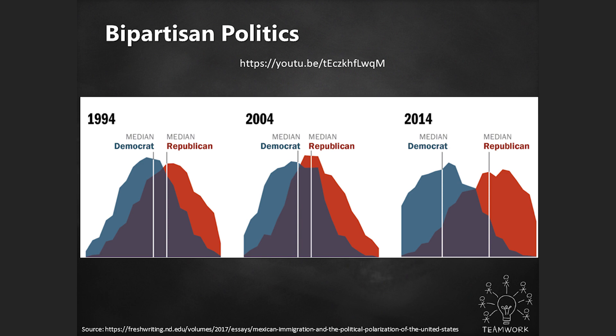In bipartisan politics, there's a lot of social network analysis — who votes with whom. Looking at a more traditional visual, we can see over time that they spread. They mapped who was voting with whom and how that changed over time, giving a good idea of how we are more bipartisan than we used to be. The answer is yes.